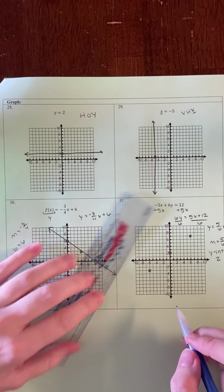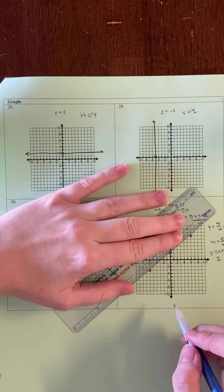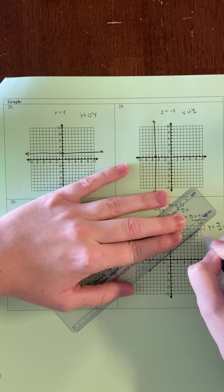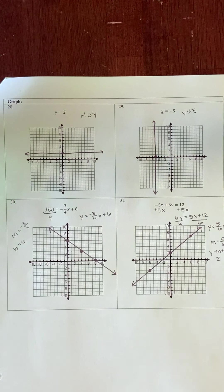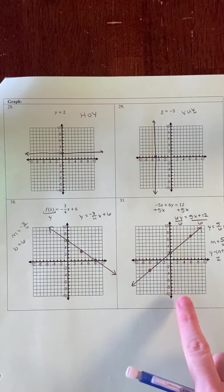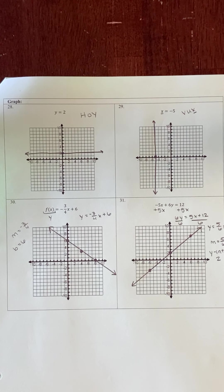Once I have my three points, I'm going to use my straight edge to connect them, extending beyond the points and including arrowheads. So again, this is one option, or you could find the x and y-intercepts.